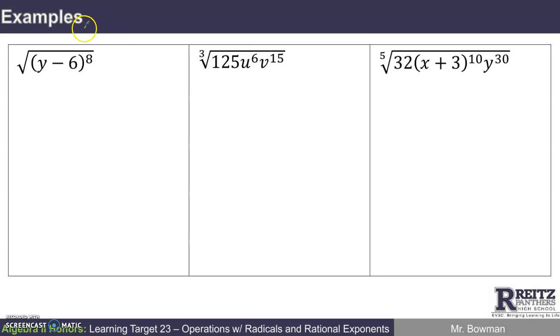Okay, here are some examples of the concept we're sharing with you. The first thing we want to find is this root. What's the index if there's nothing written? It's 2. Yeah, this is just a square root. What is the square root of y minus 6 to the 8th? Well, what could I raise to the second power and get y minus 6 to the 8th? And the answer is y minus 6 to the fourth power.